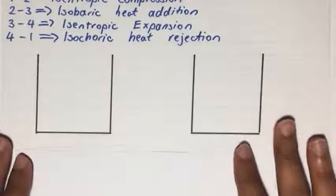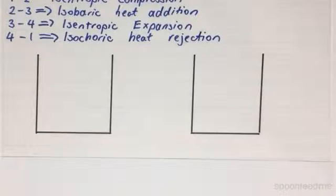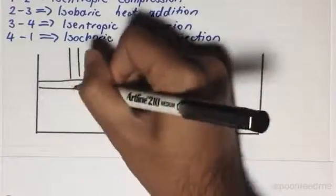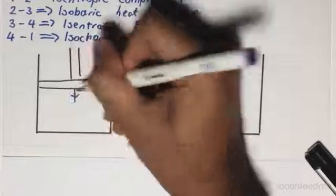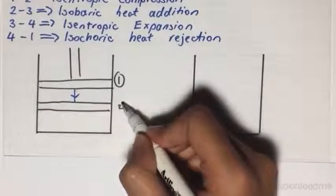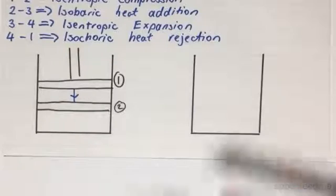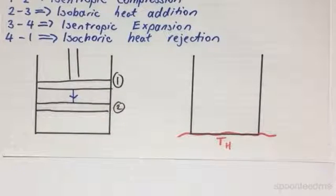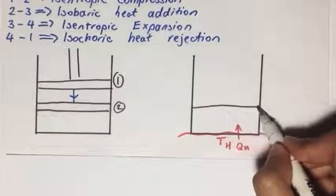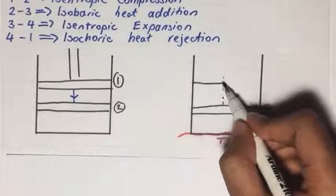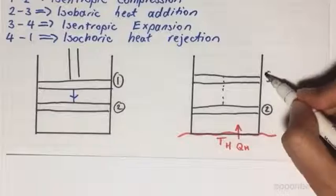So if we have our piston-cylinder arrangement at state 1, the piston will be here and it will go down, so work will go into the system until it reaches state 2. Then there will be some sort of heat addition — if you have a reservoir with a high temperature, we will have QH in. Then from state 2 it will expand to a greater volume, and this will be state 3.